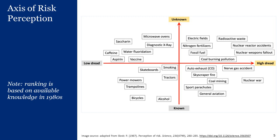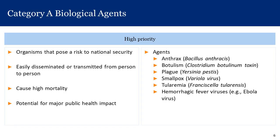This assessment is based on knowledge at a given time. This article was published in 1987, and a lot has changed since then, including the advent of the internet. If someone ranks these risks again in 2050, it will be very different because our knowledge is constantly evolving. Part of understanding risk perception is monitoring how our collective understanding changes over time and how risk perception may vary among individuals.